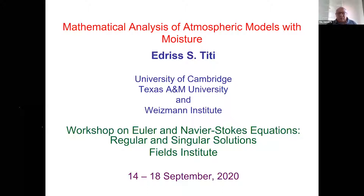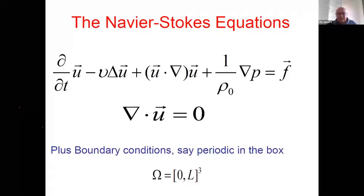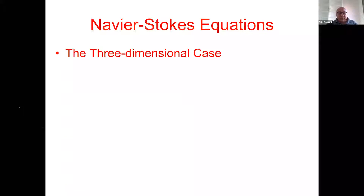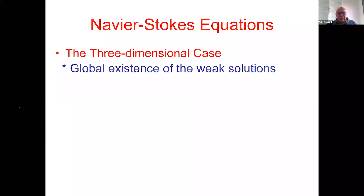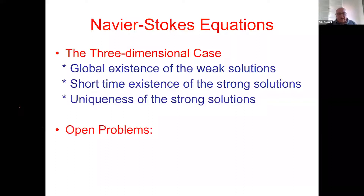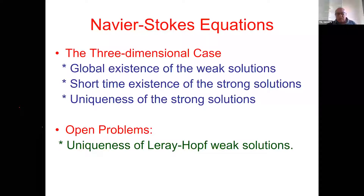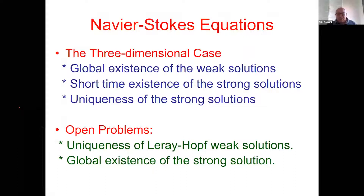I will start with the Navier-Stokes equations for periodic boundary conditions to avoid issues related to boundaries. What we know: since the work of Leray, in the three-dimensional case we have global existence of weak solutions satisfying the energy inequality, and short-term existence of strong solutions. The open problems are uniqueness of Leray-Hopf weak solutions and global existence of strong solutions.